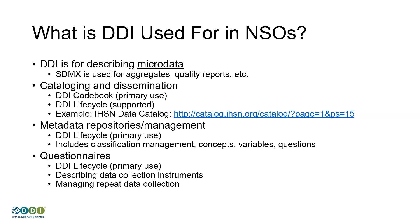DDI Lifecycle can also support those functions, but that's not its primary use. Here's the link to the International Household Survey Network data catalog — I don't want to spend time on it now, but we can come back later. It allows you to navigate at the variable level through more than 10,000 surveys in that data catalog. That's one example of how DDI Codebook can be used — quite a powerful thing, and something you probably want to take a look at.